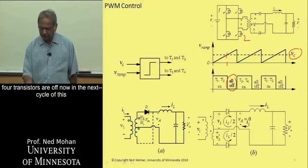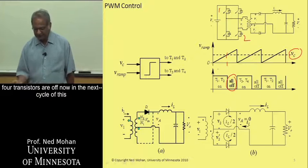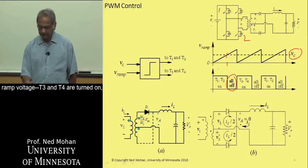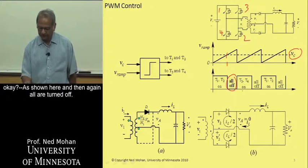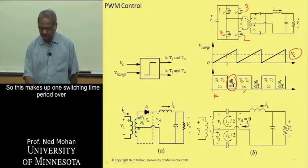And then during this interval, all four transistors are off. Now in the next cycle of this ramp voltage, T3 and T4 are turned on. As shown here, as shown here, and then again, all are turned off. So this makes up one switching time period over here,